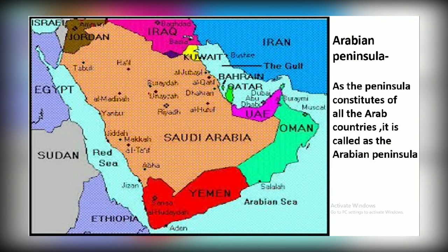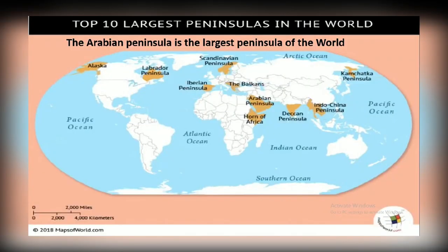As you can see in this map, Jordan, Iraq, Saudi Arabia, Kuwait, Oman, UAE, Bahrain, and Qatar are all located in the Arabian Peninsula. Comparing it with the other peninsulas of the world, the Arabian Peninsula stands as the largest peninsula of the world. It lies between the Red Sea on the west and the Persian Gulf on the east.